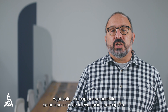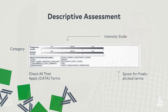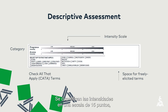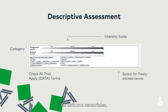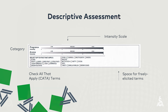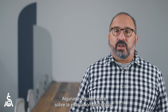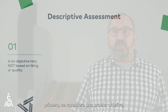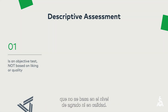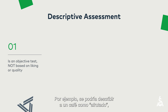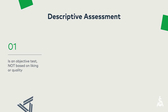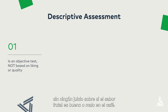Here is a screenshot of one section of the descriptive assessment. Intensity ratings follow a 1–15 scale, and tasters may choose a number of sensory attributes by checking them on the Check All That Apply list. Some key things to know about a descriptive assessment: first, it is seen as an objective test, without any basis in liking or quality. As an example, a coffee might be described as fruity, without any judgment of whether fruitiness is a good or a bad thing in coffee.